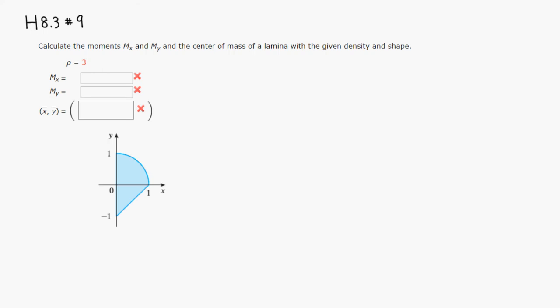So we want to find the moment with respect to the X axis, so let's do that first. We need to know the equations. The top equation is y equals square root of 1 minus x squared — just the top semicircle. The other one is a straight line with slope 1 and y-intercept negative 1, so y equals x minus 1.